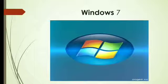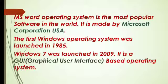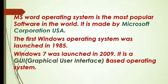Now we will read about Windows 7. Windows 7 is the most popular operating system. It is developed by a company called Microsoft. Microsoft Corporation is an American multinational technology company founded by Bill Gates and Paul Allen on 4th April 1975. The first Windows operating system was launched in 1985, and since then many versions have been launched. Windows 7 was launched in 2009. It is a graphical user interface based operating system, meaning you can use a mouse to give commands by clicking or pointing to icons and menu items.